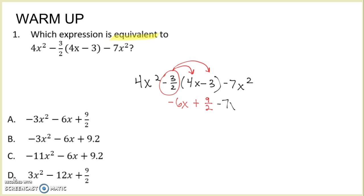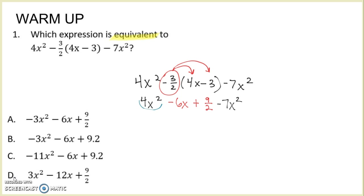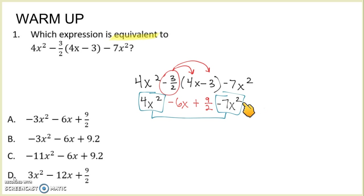We're going to bring down any term that was not affected by distributing, which was the first term and the last term — those two terms were not affected by distributing the negative 3 halves. Now we look at what are the like terms. I see an x squared and another x squared, so I'm going to get those together. Since we are combining them, only the coefficient will change, not the x squared — that's going to stay x squared.